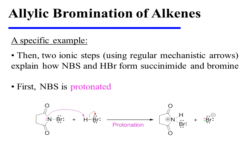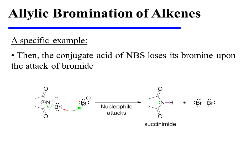At this point, between propagation steps 1 and 2, we see an interlude for the two ionic steps using regular mechanistic arrows that explain how NBS and HBr form succinamide and bromine. First, NBS is protonated by HBr, yielding its conjugate acid. Next, bromide attacks the bromine atom of the conjugate acid of NBS, forming the critical molecule of Br2 needed for propagation step 2.